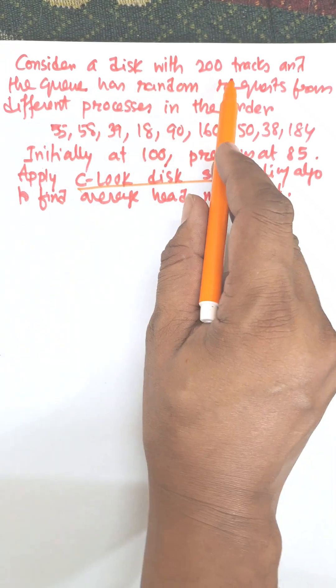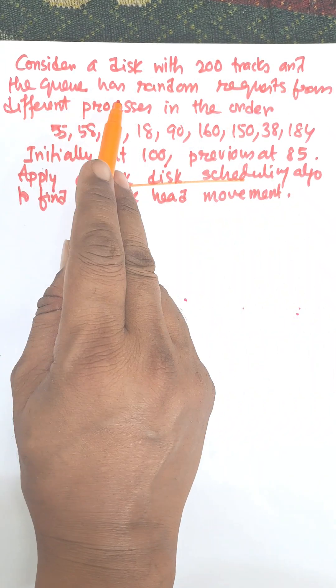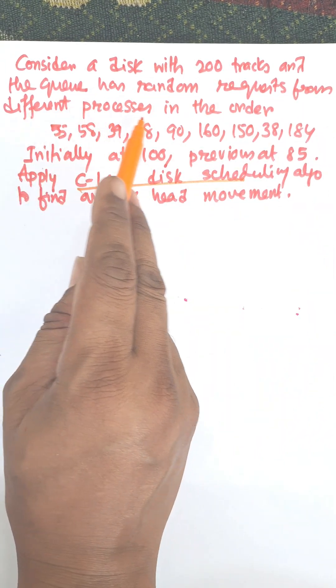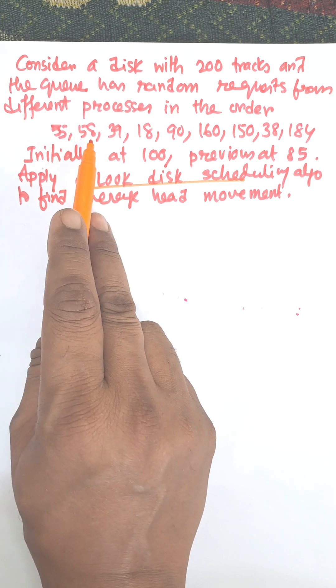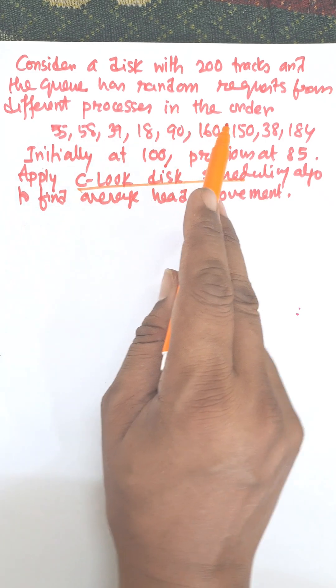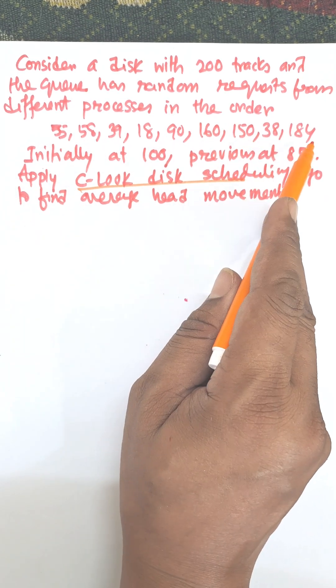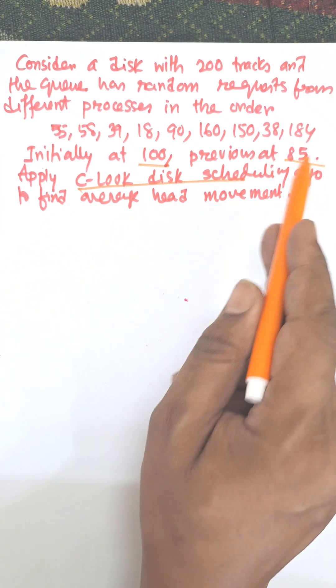The problem is a disk with 200 tracks and the queue has random requests from different processes in the order: 55, 58, 39, 18, 90, 161, 50, 38, 184. Initially at 100, previous was 85.